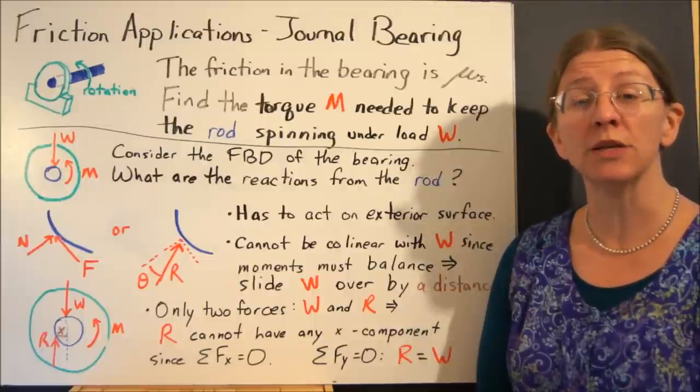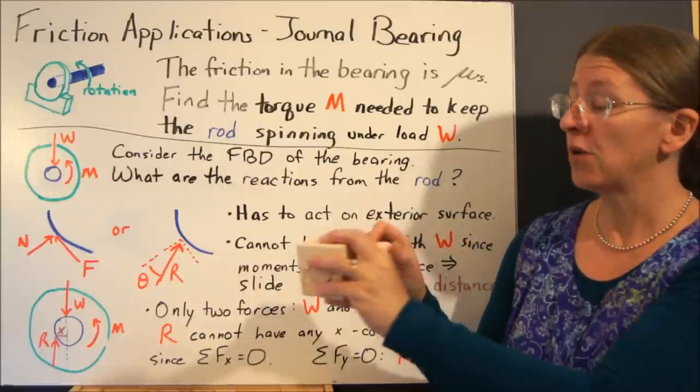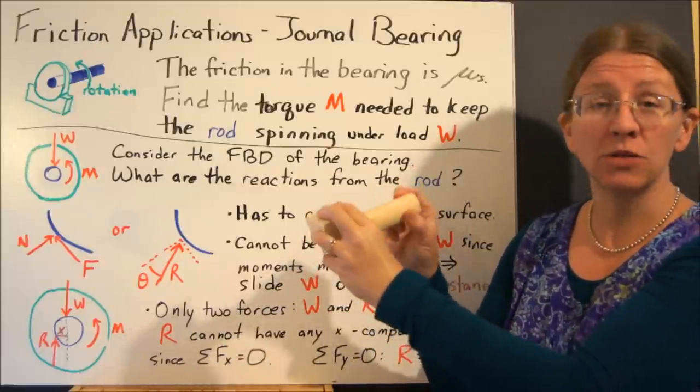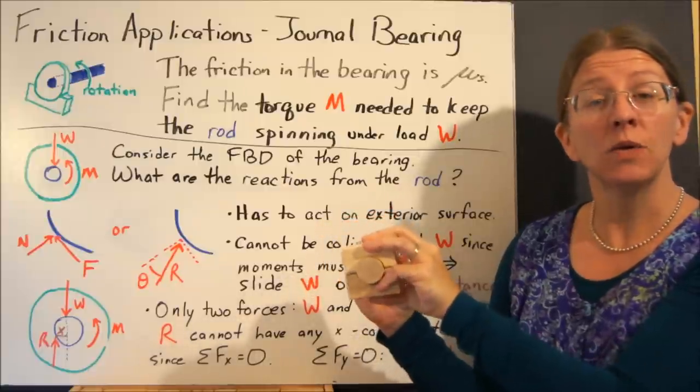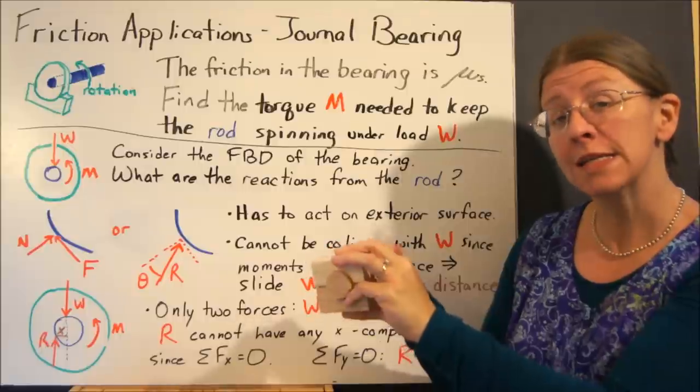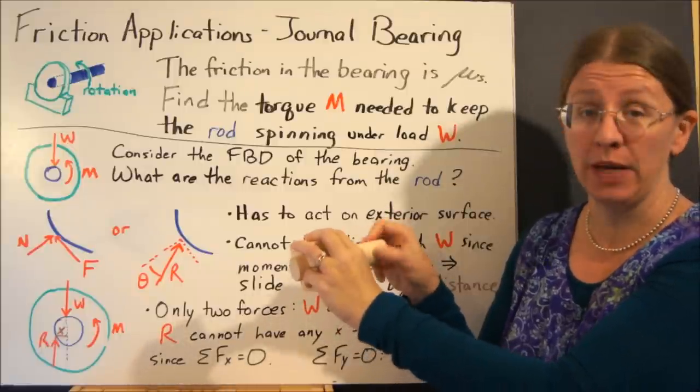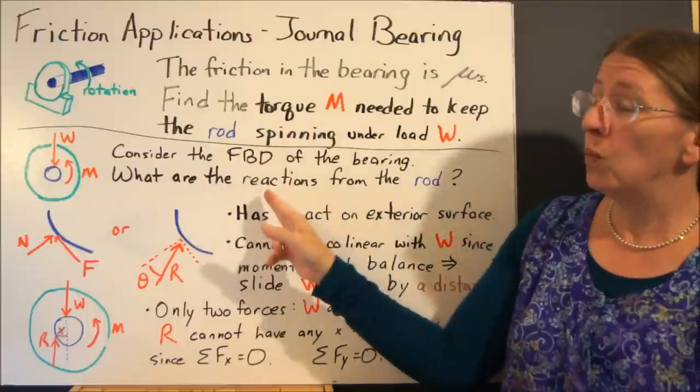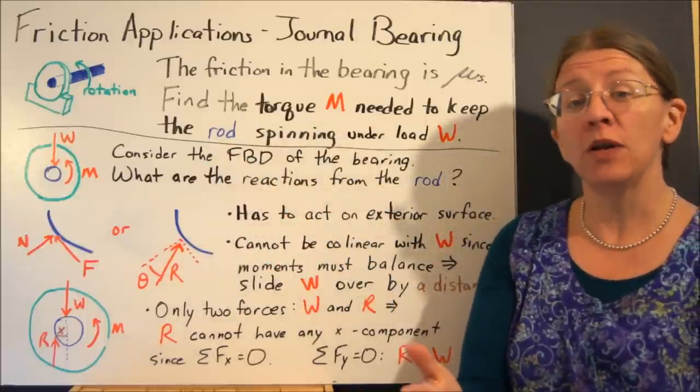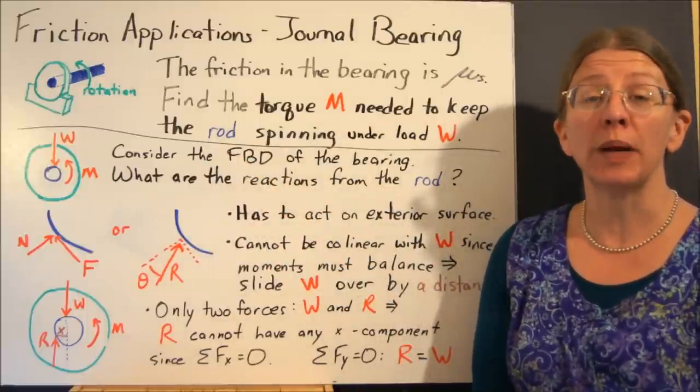Another place you can do with friction applications is in the journal bearing. So any time you have any axle going through something like the bearing and it's spinning, we can ask the question, what torque does it take on this rod to keep it spinning or to start it spinning from zero? To do that or any other kind of equilibrium problem, you have to figure out what your free body diagram looks like.